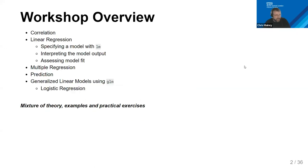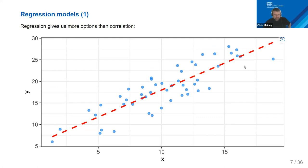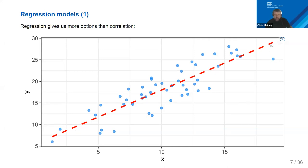Imagine you have some data — a thing called Y which you're trying to predict. In our context this could be number of cases of a particular thing, how often an event happens, or a count. We've got something correlated with it — X — that potentially explains it. We're trying to work out this best-fit line: the simplest form of regression, the linear model.